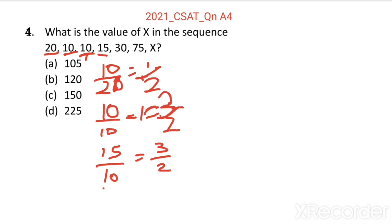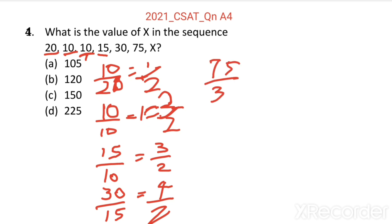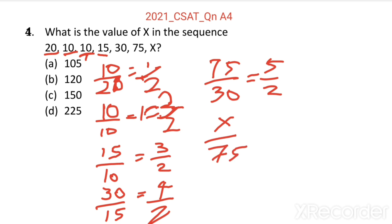Then fifth term 30 divided by 15 equal to 4 by 2. In this way, 75 divided by 30 equal to 5 by 2. X divided by 75 equal to 6 by 2, which is equal to 3.